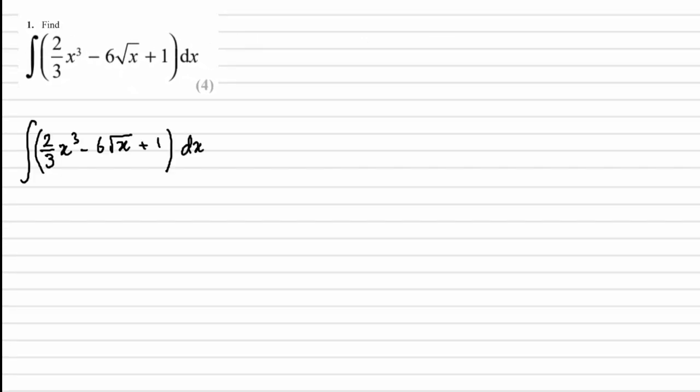So we can start off by saying that the integral of 2/3 x³ minus 6√x plus 1 with respect to x is the same as the integral of 2/3 x³ minus 6x^(1/2) using just my knowledge of indice rules - the square root of x is the same as x to the power of a half - plus 1 with respect to dx.